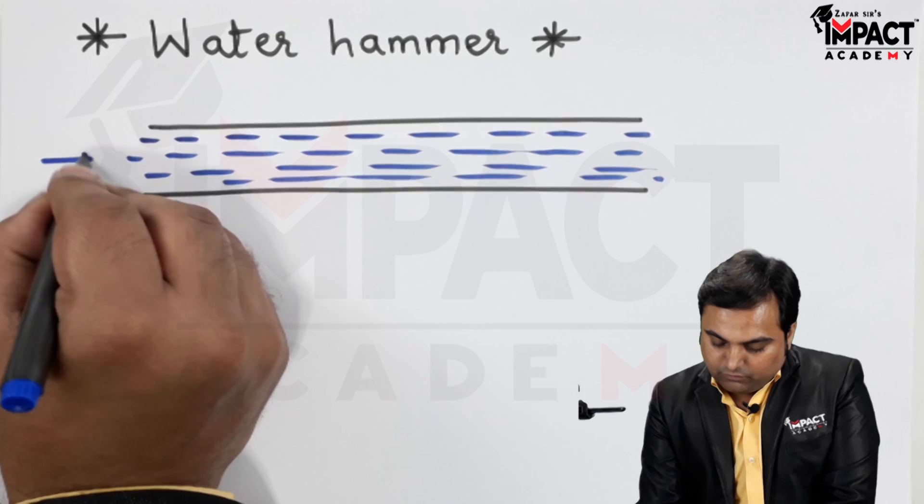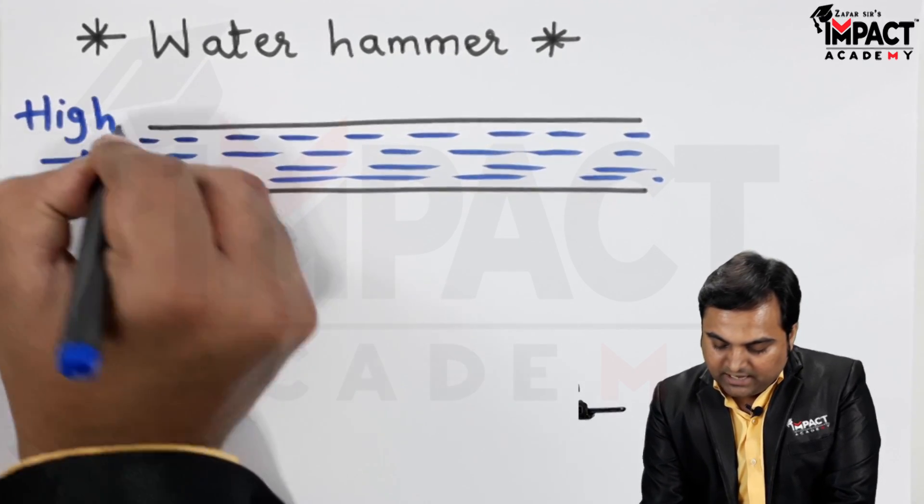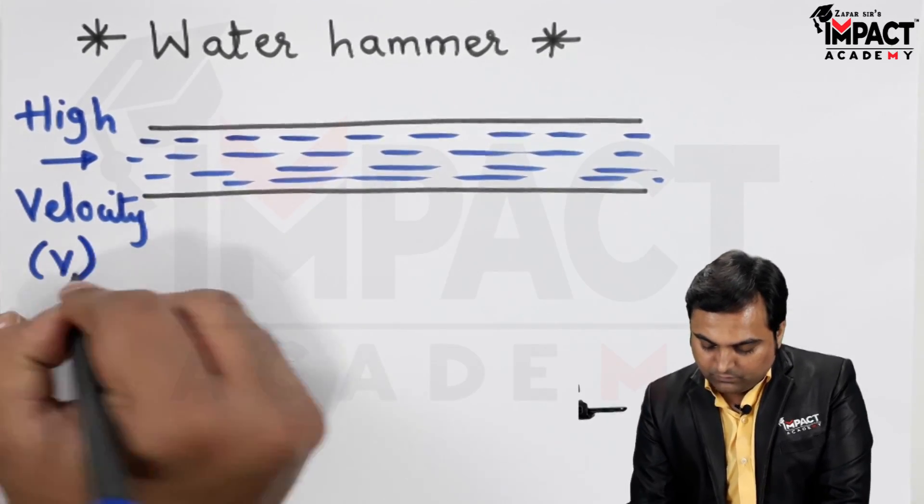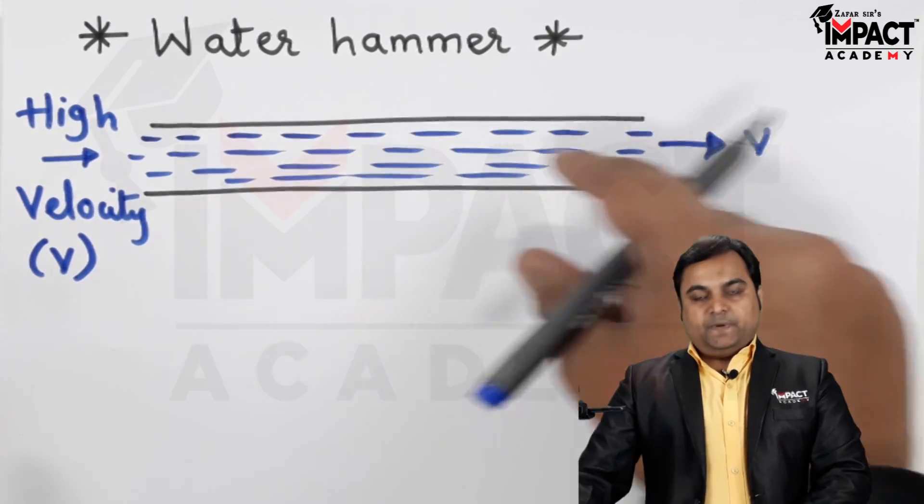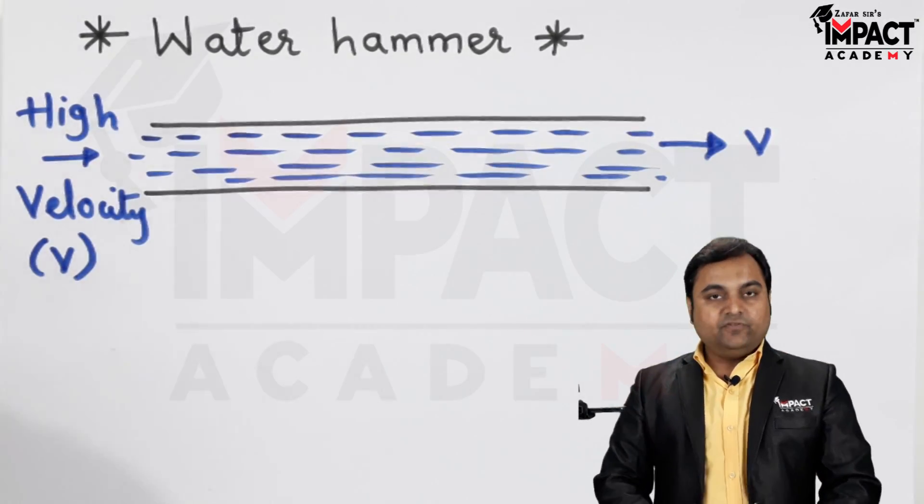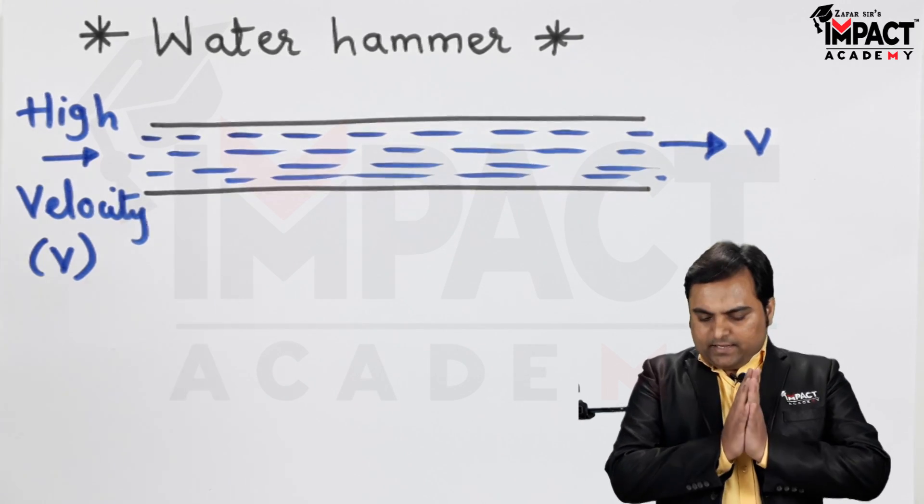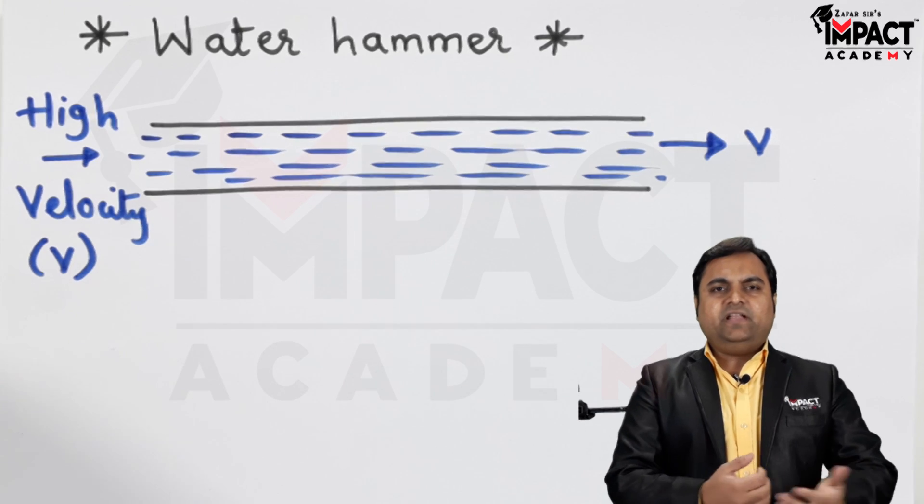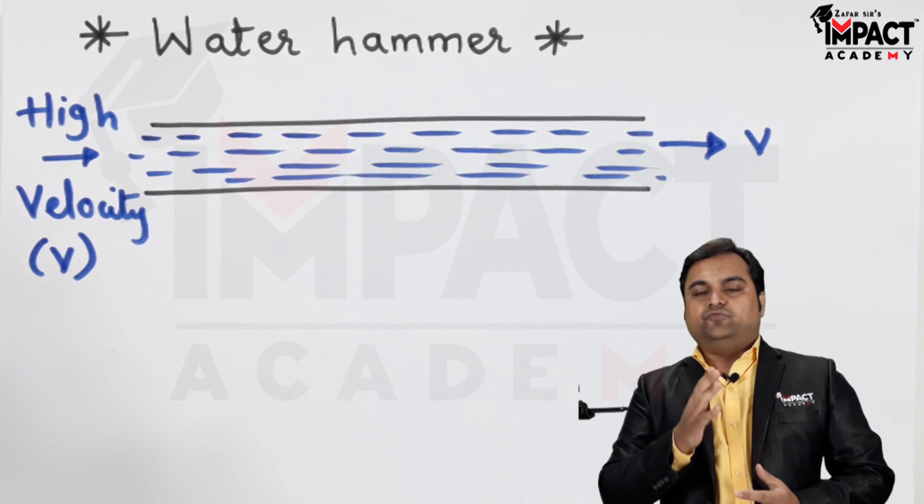And this water is flowing with a very high velocity V. Inside this pipeline, the water is moving with a very high velocity. Now if this water is having a very high velocity, it means it even has a very high amount of kinetic energy.